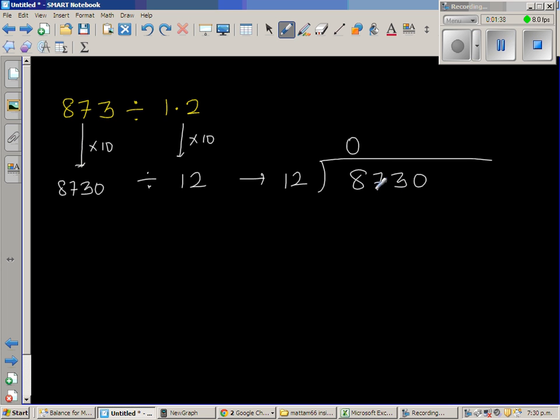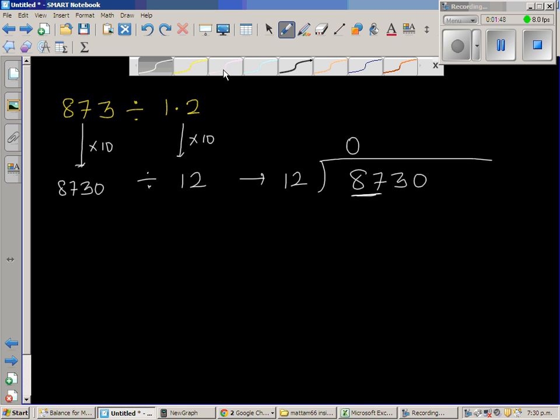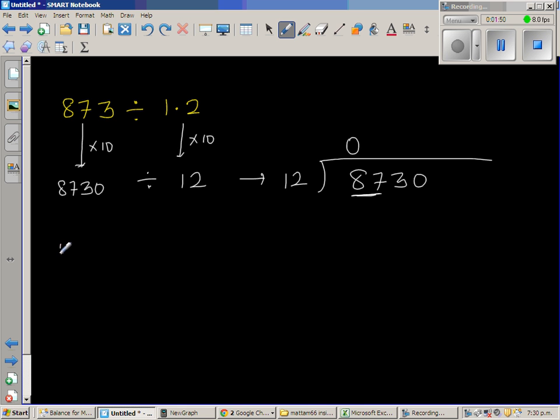Now you've got 87. Look at 87. So you're asking the question, 12 goes in 87 how many times? So let me write it here. So you should be good in times table. So 12 times 7 is 84.